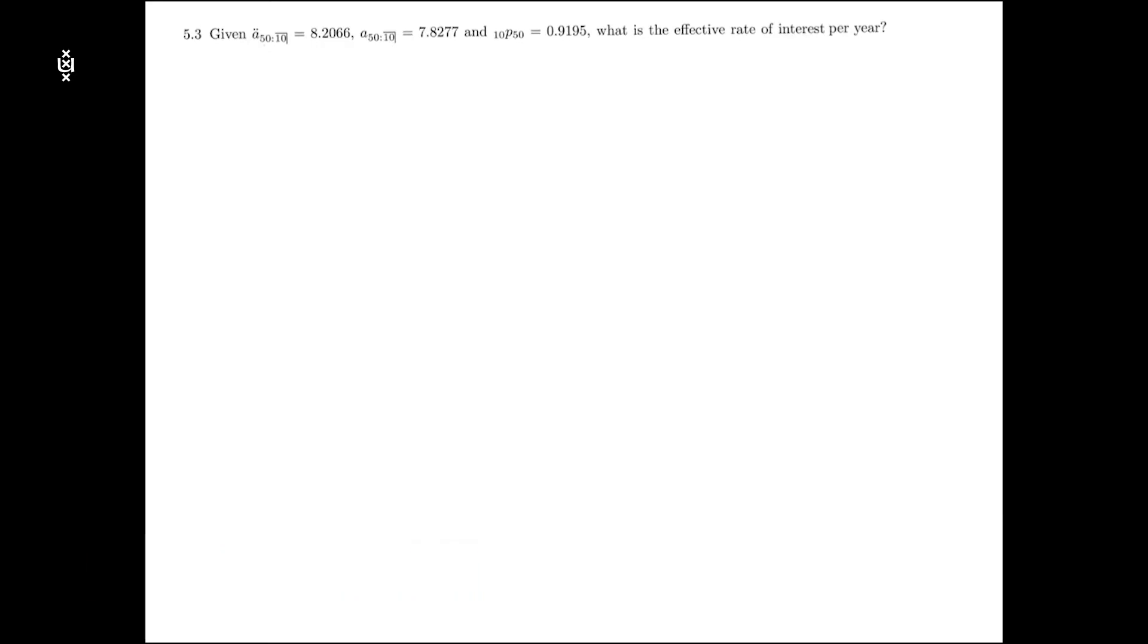In this exercise we are given three quantities. We know two term annuities, one is term annuity due and another one is term immediate annuity. We also know the survival probability over the 10 years for a life aged 50 years.